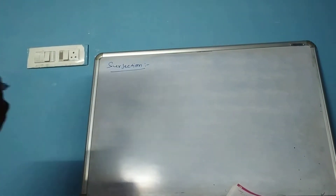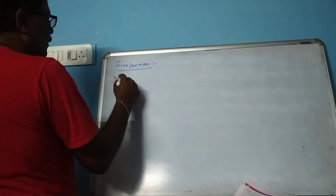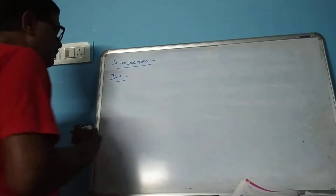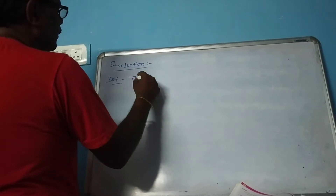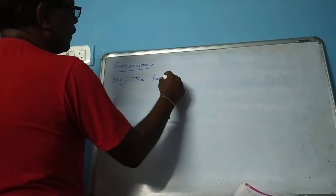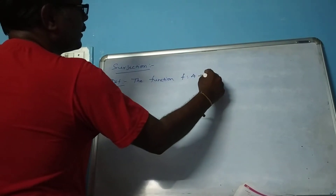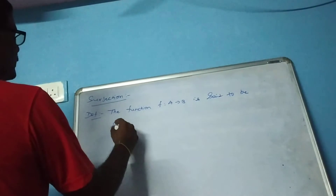Okay, you see friends — definition. The function f, a mapping from A to B, is said to be a surjection.